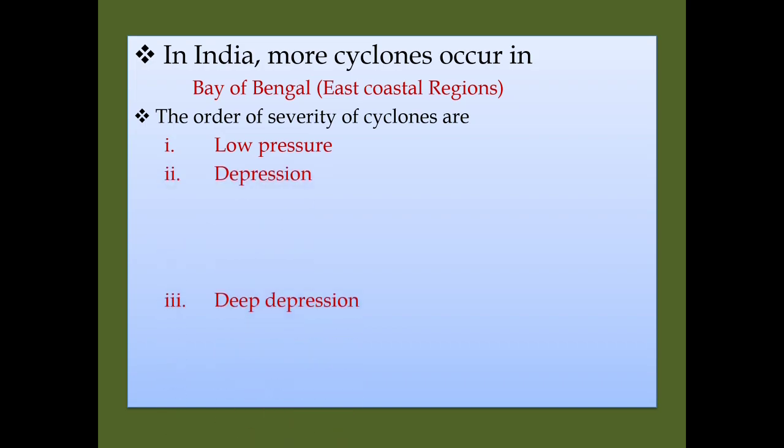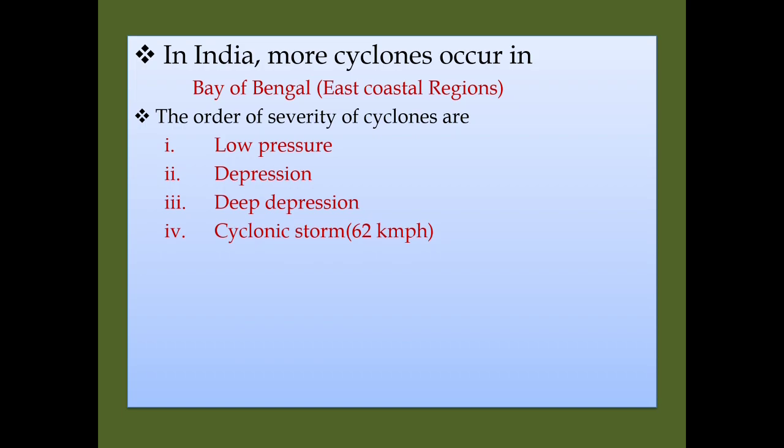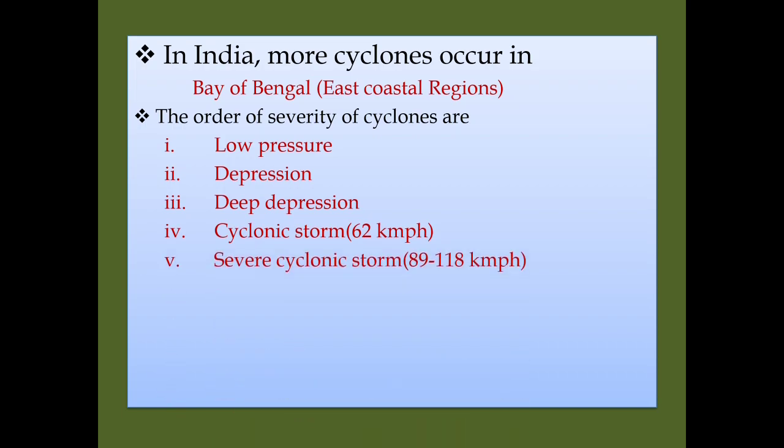deep depression, and cyclonic storm. When the wind speed is around 62 kilometers per hour, we can call that deep depression a cyclonic storm.